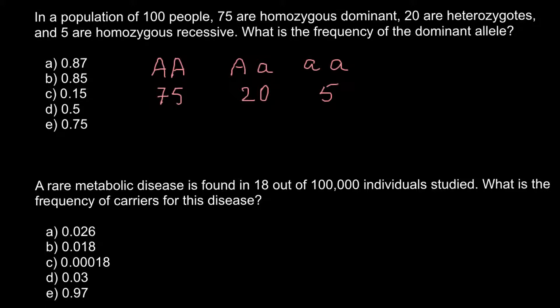In order to find the frequency of the dominant allele, as you see we have here 75 people, each of them has 2 dominant alleles. So we have to multiply 75 by 2. So this is 1 dominant allele, this is another one. And each person here have 2 such alleles.